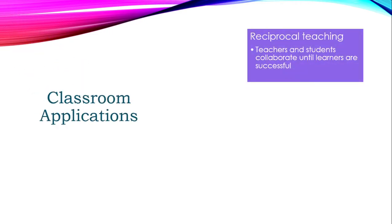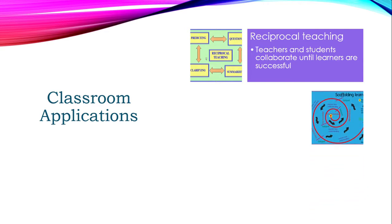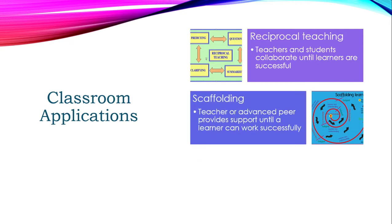So how can you use this in your classroom? There are several strategies to help your students be successful. One is reciprocal teaching — often in a large group where everyone is working together, asking questions, summarizing, clarifying, and predicting, with teachers and students collaborating until all learners are successful. Another example is scaffolding: putting those supports into place, giving students little bits of guidance and information until they can do it themselves. Scaffolding works great and is definitely an application that works very well with social interaction theory.